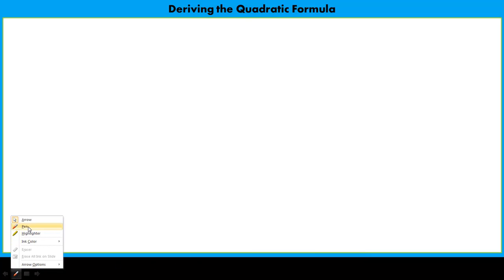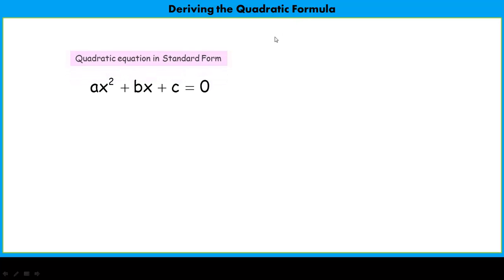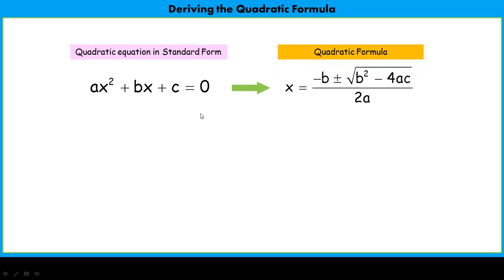Hey guys, today we're going to learn how to derive the quadratic formula, which basically means we are going to take a quadratic equation in standard form and show, or sometimes it's called prove, that this quadratic formula will solve any quadratic equation in standard form for any values of a, b, or c. And we can solve that simply by replacing those a, b, and c into the quadratic formula itself.